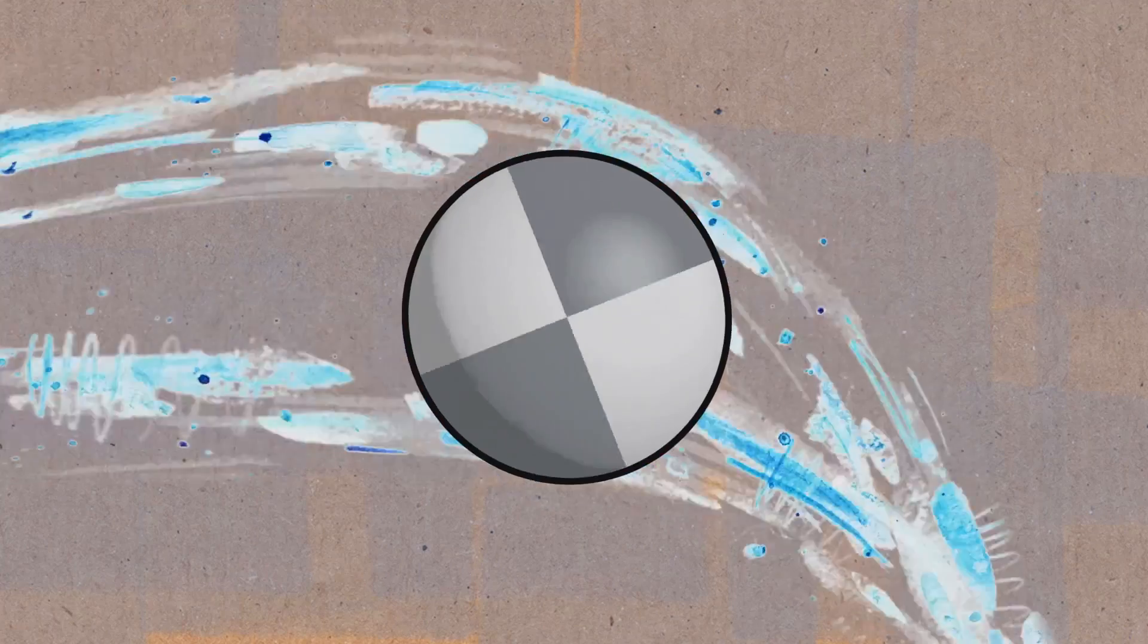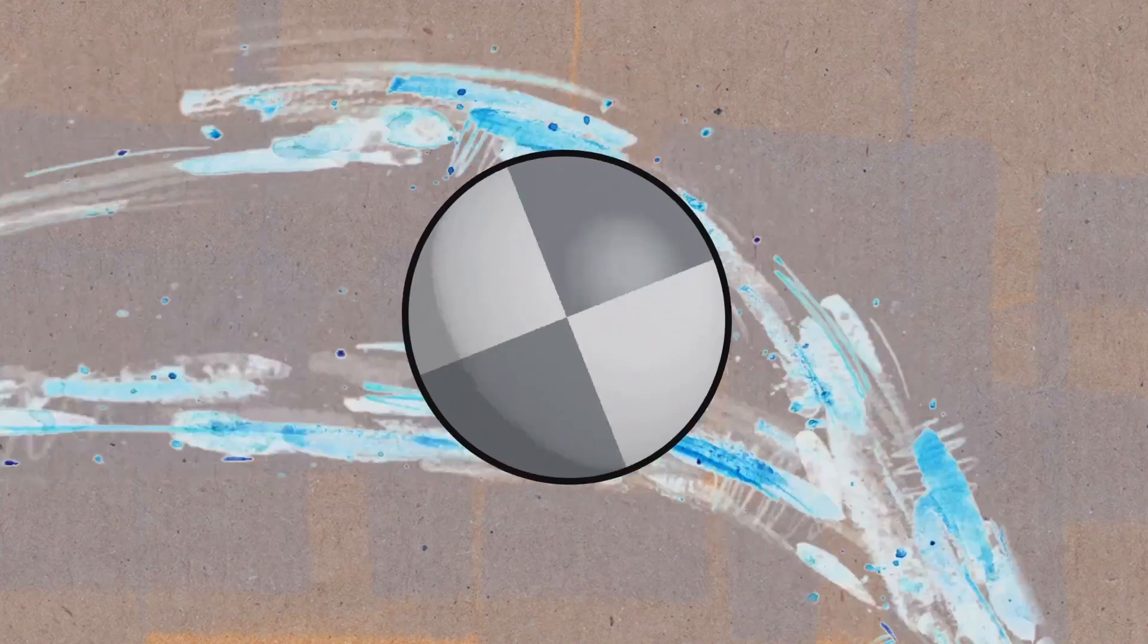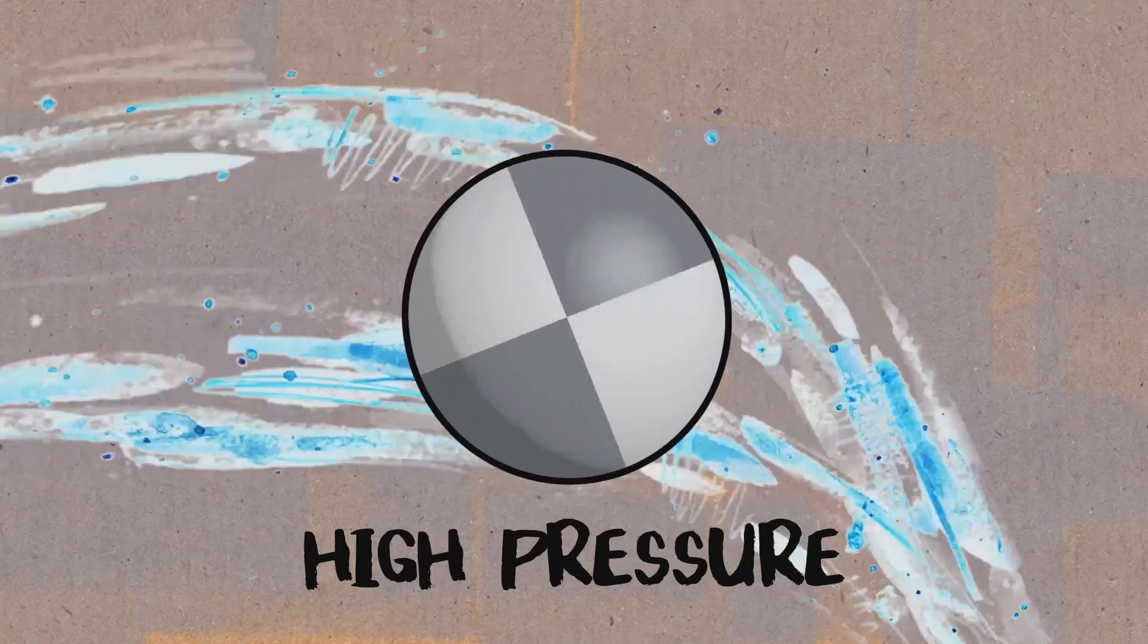So whenever there is a curvature of the flow line, that creates what we call the pressure gradient. If it's curving like this, the inner part has high pressure and the outer part has low pressure. And mathematically speaking, it's really related to the centrifugal force. So centrifugal force for speed V is like V squared over R. R is the radius of this curvature. And that's actually the pressure gradient that you are creating.